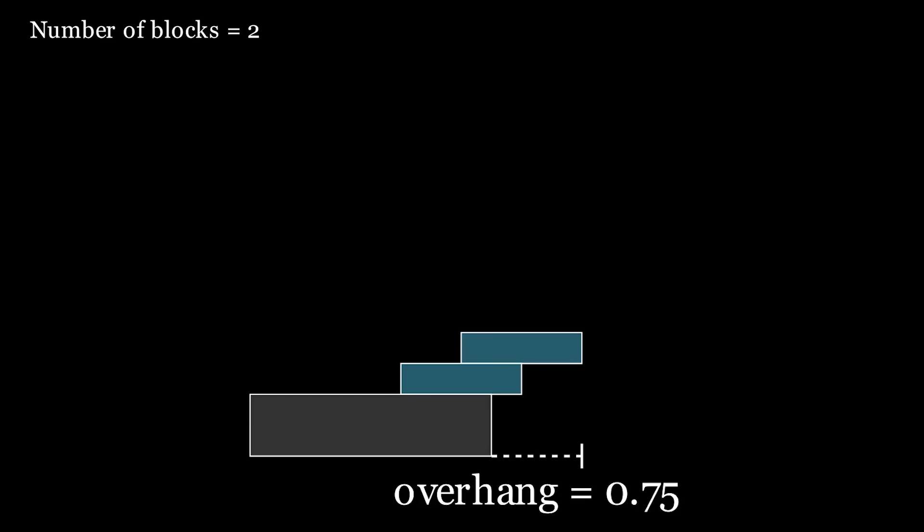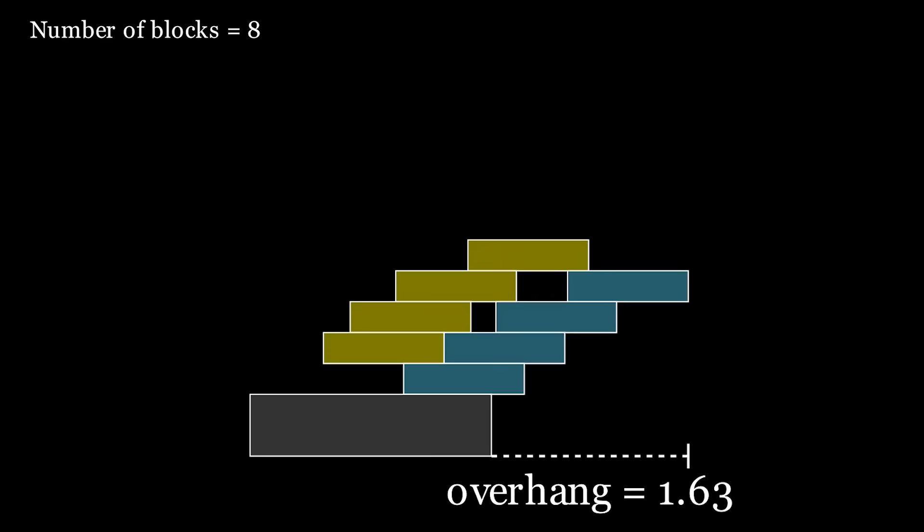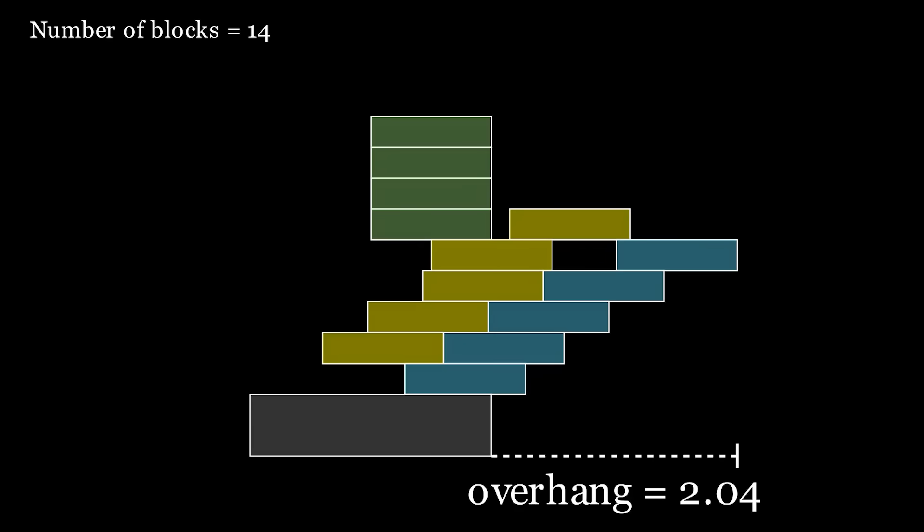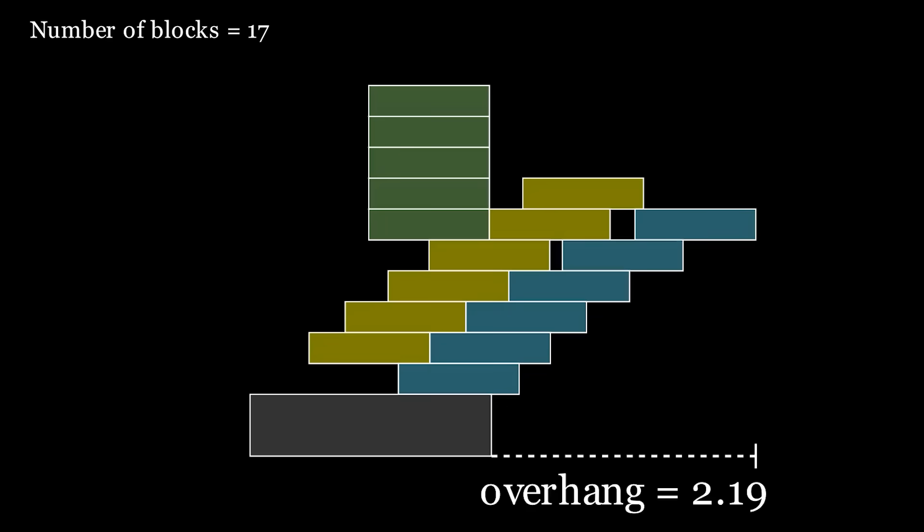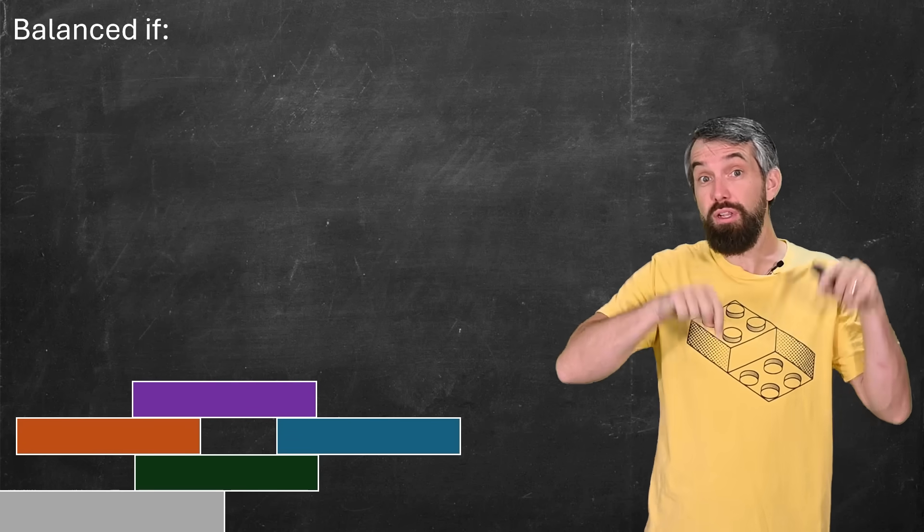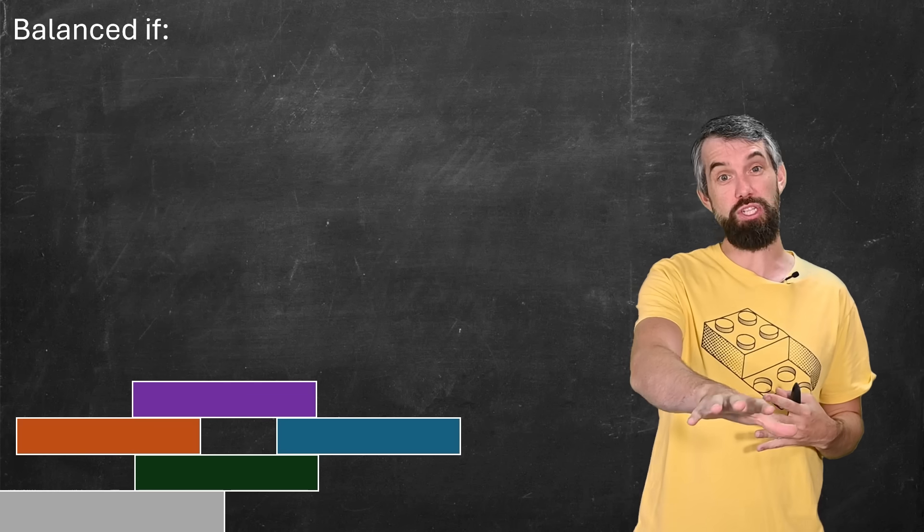But what about the spinal or parabolic stacks? In the Patterson and Zwick paper, they analyze the forces and I'll mostly leave the lovely paper for you. But at a high level, the basic idea is the same as it was for the Tower of Lyra. If I have a stack of blocks like this, they all apply forces to each other at different locations up and down. I'm going to assume that there's no friction.